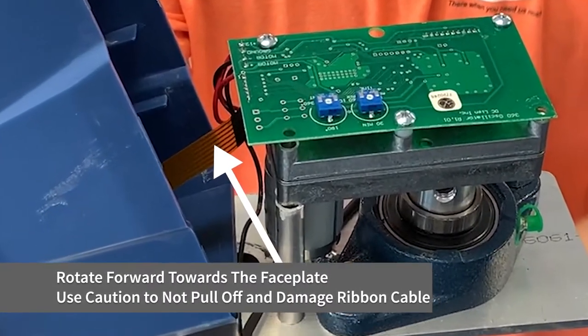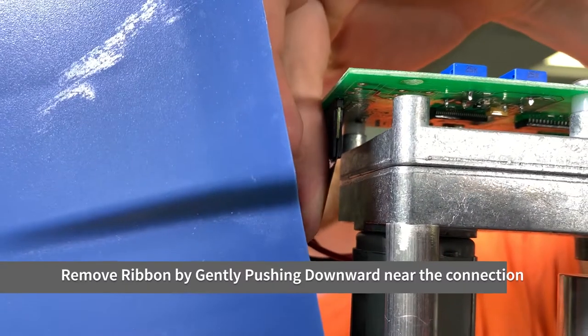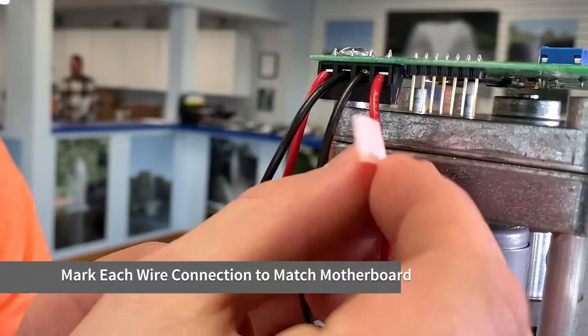The faceplate is connected to the control board by a ribbon cable attached to the inside of the cover. While holding the cover, push downward on the connector cable to release it from the circuit board.